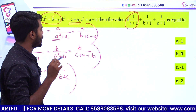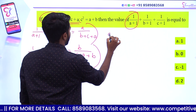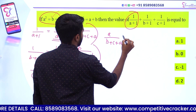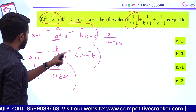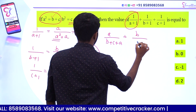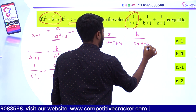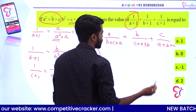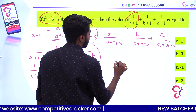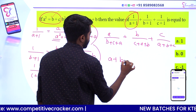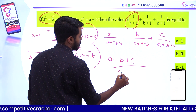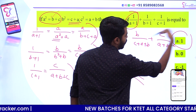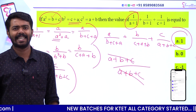Instead of 1 by a plus 1, we write a by b plus c plus a, or a plus b plus c. 1 by b plus 1 equals b by c plus a plus b, and 1 by c plus 1 equals c by a plus b plus c. The denominator is the same: a plus b plus c. So the answer is 1. Option A.